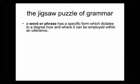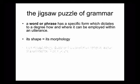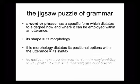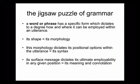Moving from the grammar of jigsaw puzzles to the jigsaw puzzle of grammar: a word or phrase has a specific form, which dictates to a degree how and where it can be employed within an utterance. This form or shape is the morphology of a word. And this morphology dictates its positional options within the utterance — so if something is marked for being a noun, it can't occupy a syntactic position that a verb or an adverb would. Any given word or phrase also has a surface message and a subsurface message, which dictates its ultimate employability — its literal meaning and its connotation. Take the word 'child' or 'brat', for example; under certain circumstances, we can use one but not the other.